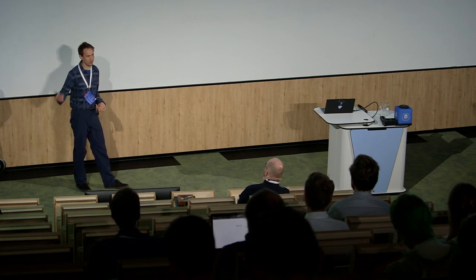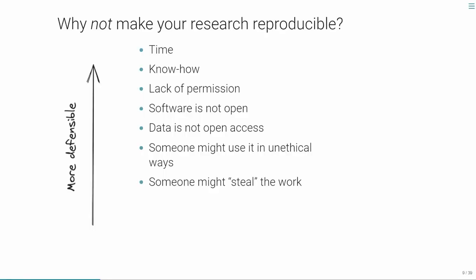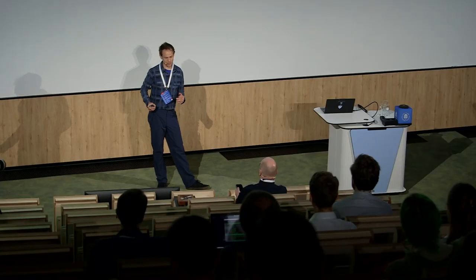Someone might use it in unethical ways — I've heard that about my own research: 'What if someone takes your code on prioritising cycle infrastructure and uses it to build roads?' But the argument that people could also use it to prioritise walking infrastructure is equally valid. And then there's the fear that someone might steal the work. That fear of plagiarism is real, especially for early-career academics. But in some ways, openness can actually protect you — if you had it documented on GitHub, you'd have a trail of evidence. I don't think that argument is as strong as some people think.